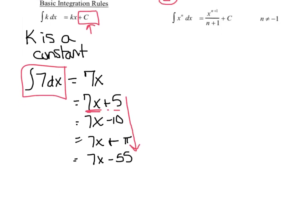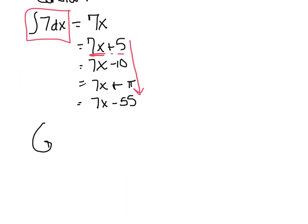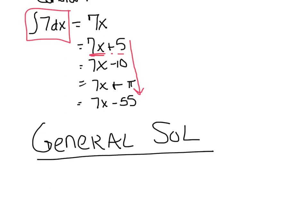So what that's called is the general solution. When I integrate k dx, I get my kx plus c. When I stick that plus c on, I'm implying we just get a general solution — it could be anything in the form of this.